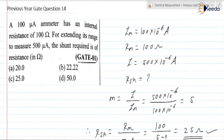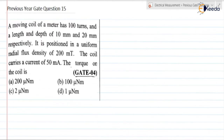This is about previous year GATE question number 14, from the GATE 2001 examination. Previous year GATE question number 15. Let us read the question. A moving coil of a meter has 100 turns and a length and depth of 10 mm and 20 mm respectively. It is positioned in a uniform radial flux density of 200 milli tesla. The coil carries a current of 50 milli ampere. The torque on the coil is — with four options: 200 micro newton meter, 100 micro newton meter, 2 micro newton meter, and 1 micro newton meter.